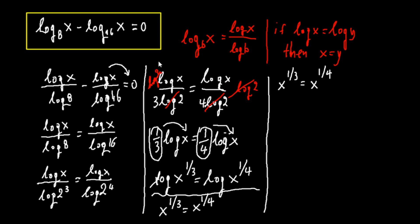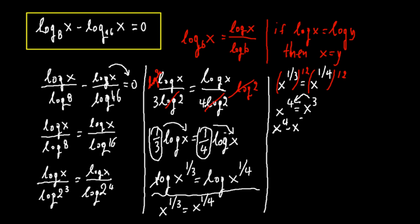We raise both sides to the 12th power — raising the left side by 4 and the right side by 3 — which gives us x to the 4th minus x to the 3rd equals 0, or x to the one-third times (x minus 1) equals 0. So we have two solutions: x equals 0 or x equals 1.